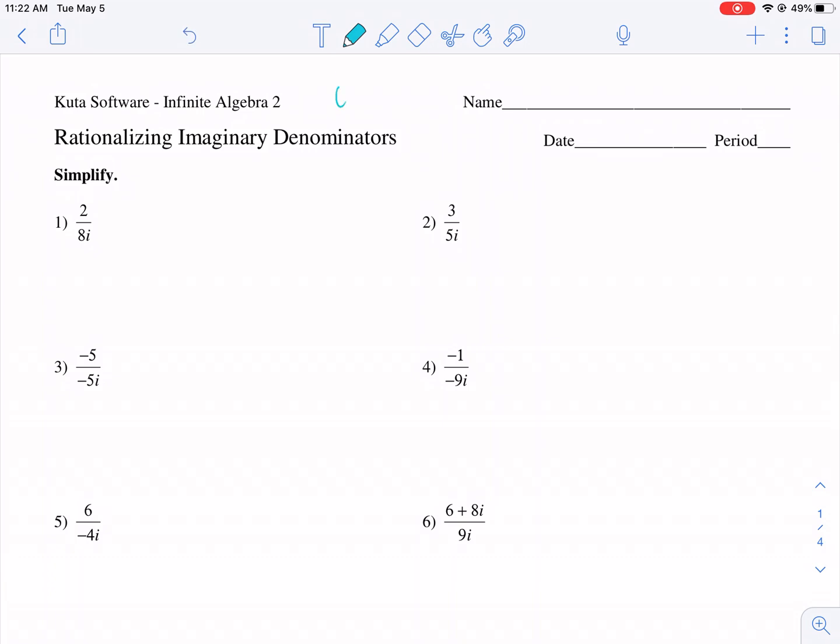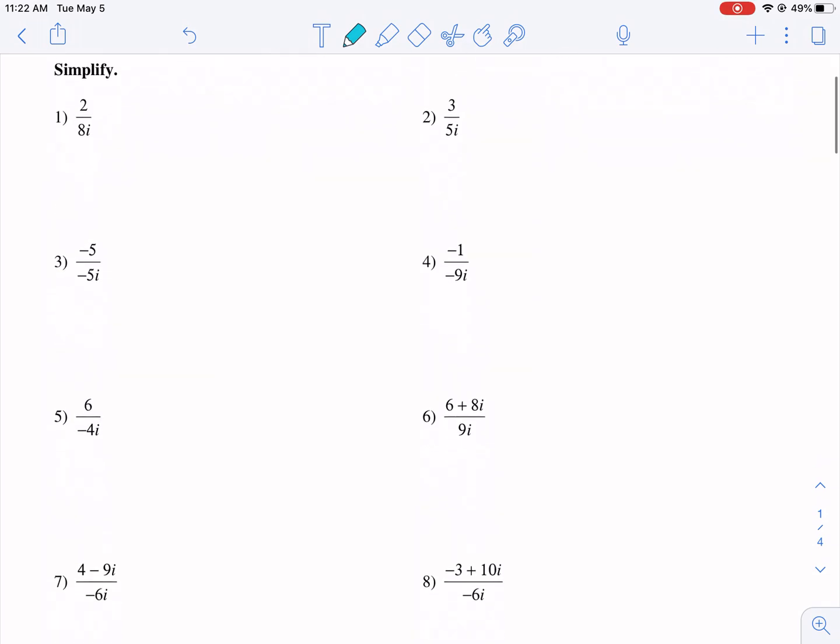So when we're talking about imaginary numbers, we're of course talking about i, the designation i, that's equal to the square root of negative 1. i allows us to handle negative square roots, otherwise we couldn't. We would say there's no real solutions, but now there's imaginary solutions that we can talk about.